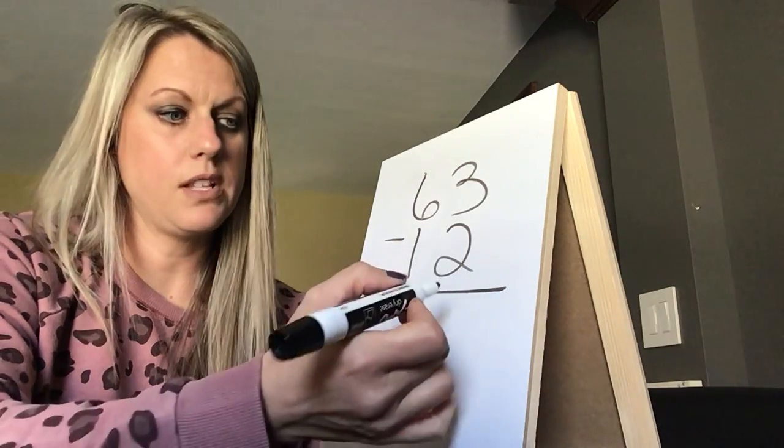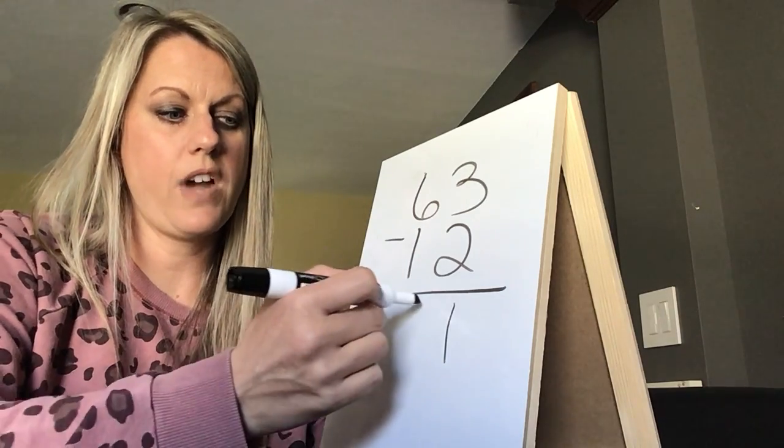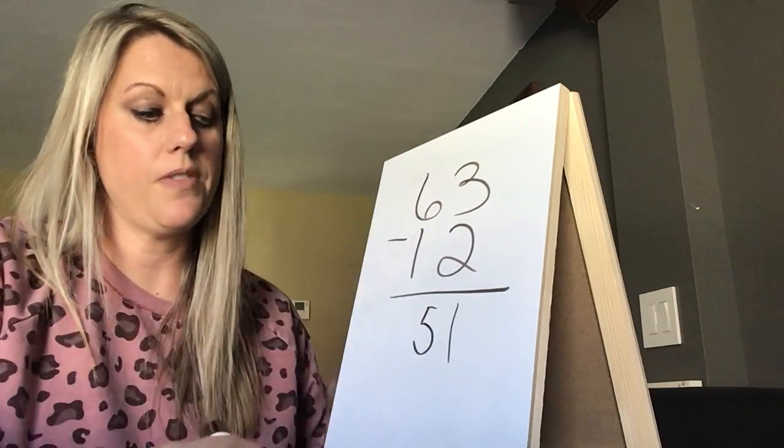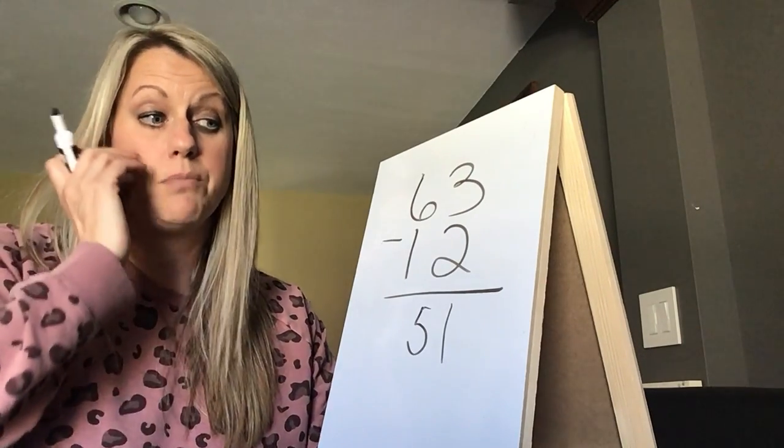And if I have three and take away two, that's one. And then I go to the tens column, six take away one is five. And we've already talked about when the number is bigger on the top, there's no need to stop. That's usually when it's a pretty simple problem.